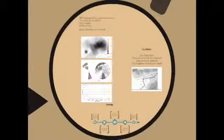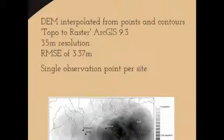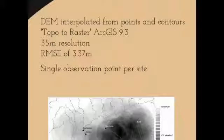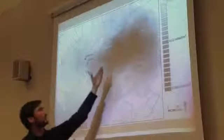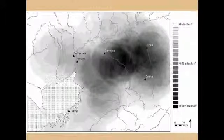We need a model of the landscape — a digital elevation model interpolated from observations with a 35-metre resolution. The root mean square error between the observations and the interpolated model is 3.37 metres, which is important for the method. I use a single observation point per site. You can see the density distribution of the number of sites in the area, with a clear overemphasis on the very fertile Vega and Campiña area, significantly fewer sites along the Guadalquivir river itself.